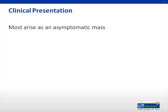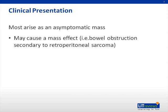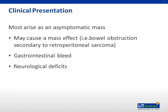The clinical presentation of a sarcoma is widely described as an asymptomatic mass. Many patients present with a sarcoma that arose asymptomatically and just continued to grow. These tumors can cause mass effects — for example, if they're intraperitoneal, they may cause a bowel obstruction. They may also cause gastrointestinal bleeds, and sarcomas that arise in extremities with large neurovascular bundles can cause neurologic deficits.